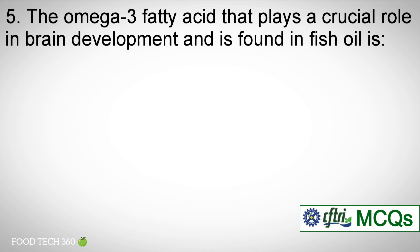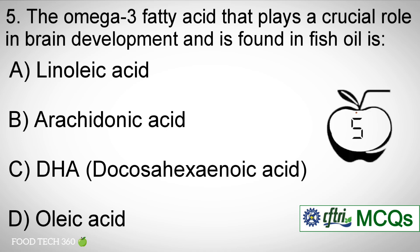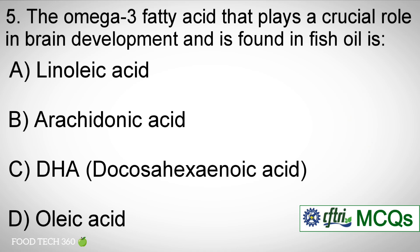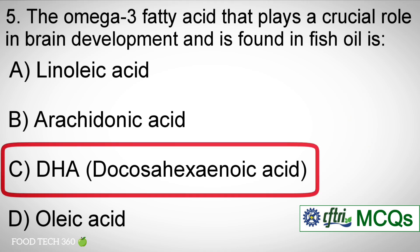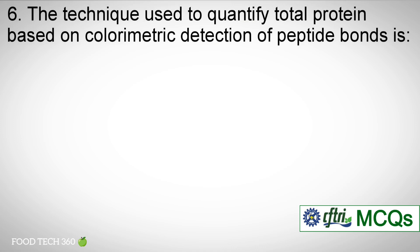Question number five: the omega-3 fatty acid that plays a crucial role in brain development and is found in fish oil is — options: a) Linoleic acid, b) Arachidonic acid, c) DHA, d) Oleic acid. Correct answer: c) DHA — Docosahexaenoic acid.